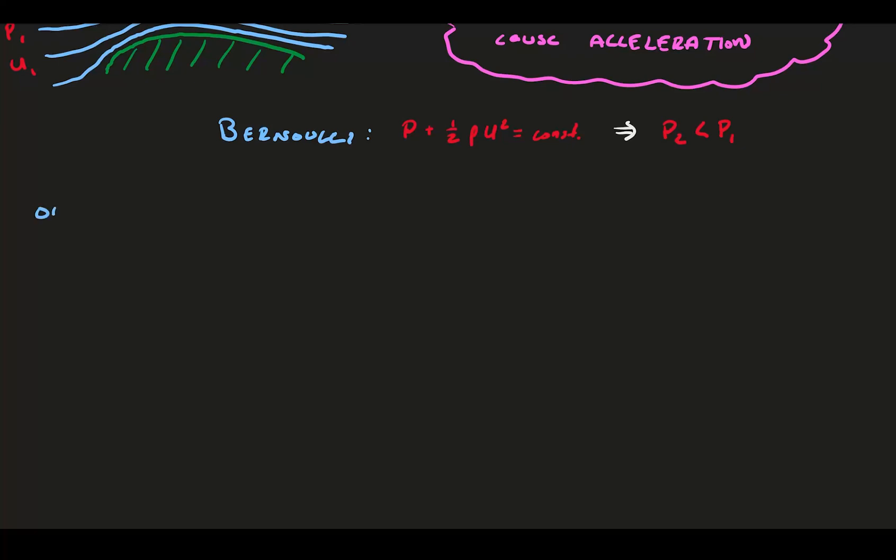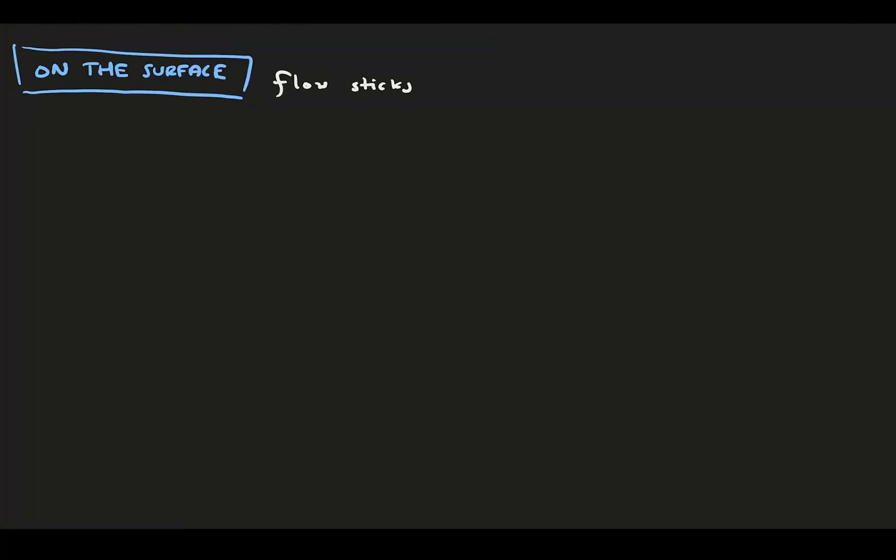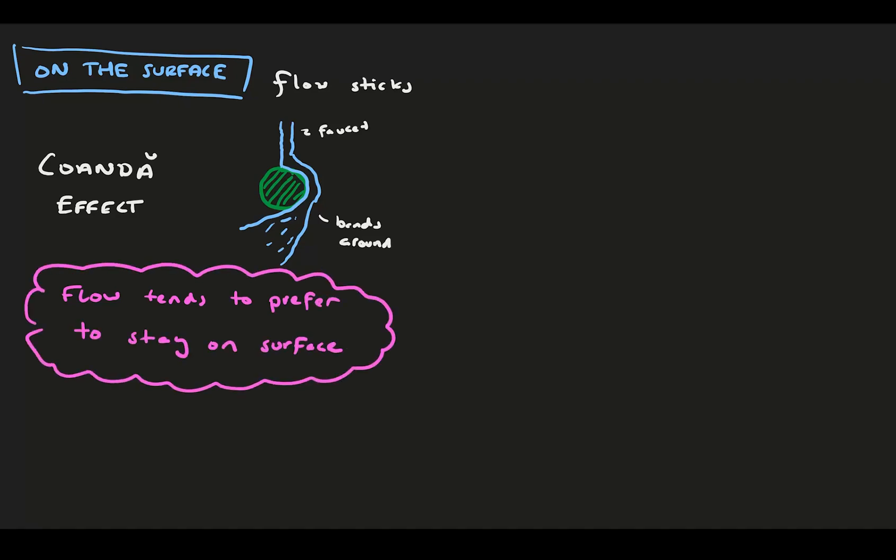Our next region is the curvature on the top surface, where flow tends to stick or stay attached to the surface. In fluid mechanics, we learn about something called the Coanda effect. If you were to take the back side of a spoon, or a cup turned on its side, and place it in a faucet, you would notice that flow tends to bend around the curvature and stays on the surface, despite bending further than its original direction. This is the Coanda effect in action. Flow tends to prefer to stay attached to a surface, even if it curves.